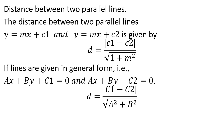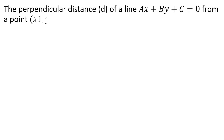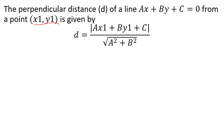For the line ax + by + c = 0 and a point (x1, y1), the perpendicular distance d from that point to the line is given by the formula: d = |ax1 + by1 + c| divided by the square root of (a² + b²).